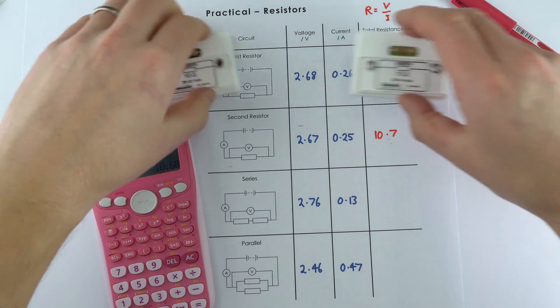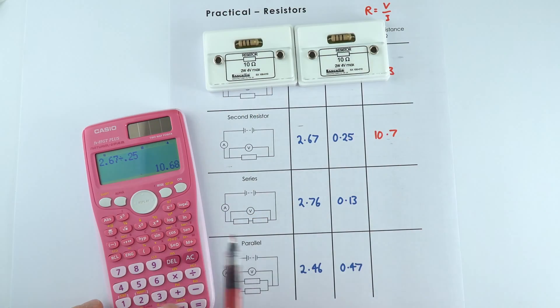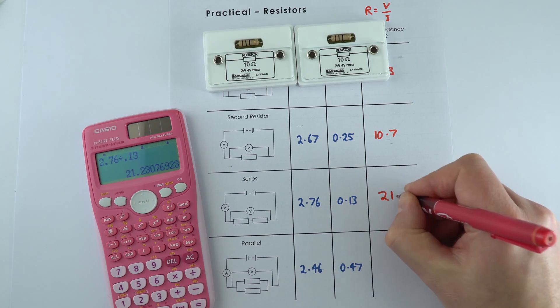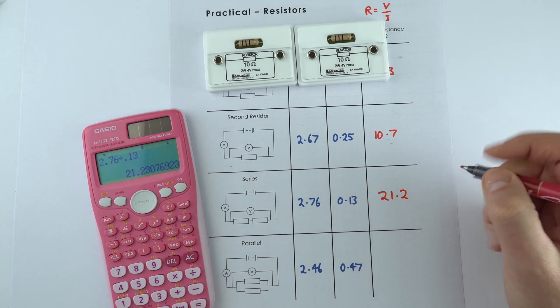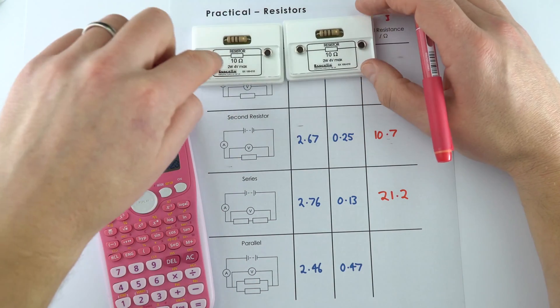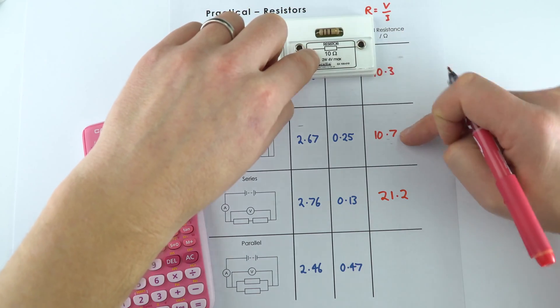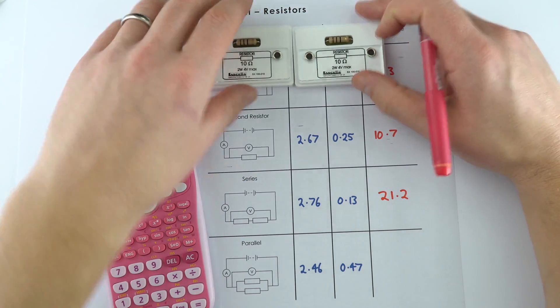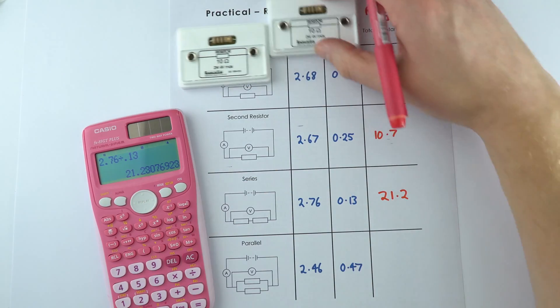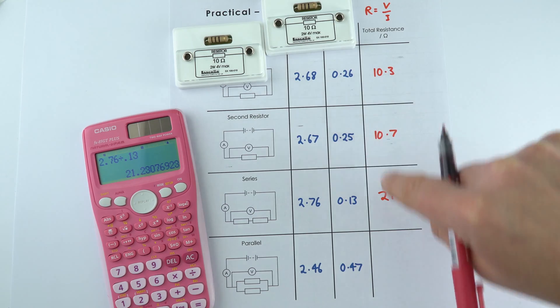Now when these were added in series, we can see that 21.2, so as we had these in series we effectively added their individual resistances together to get a higher resistance of 21.2, which is a bit like 10 and 10 is 20.